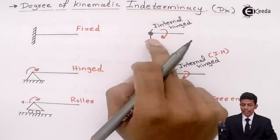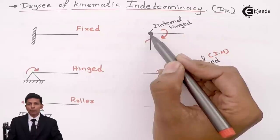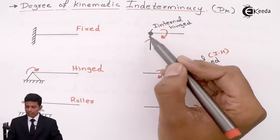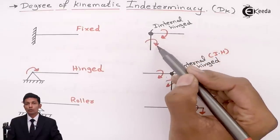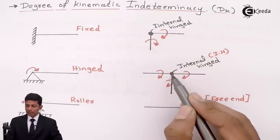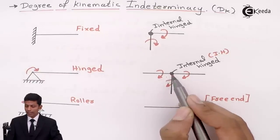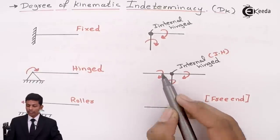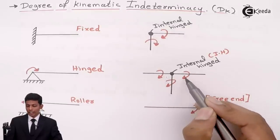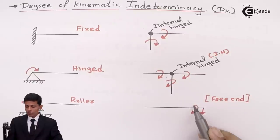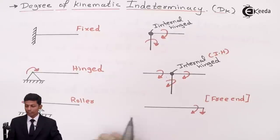For an internal hinge connecting two members, DK = 2 (one for each member). If the internal hinge is at the center connecting three members, DK = 3. For a free end, DK can be 1 or 2 depending on whether axial deformation is considered.